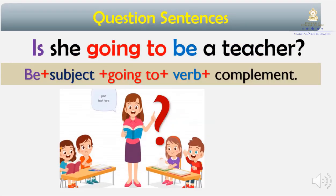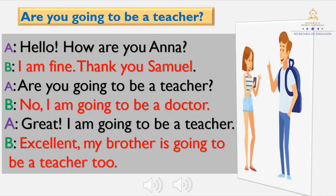Here I have a question example: Is she going to be a teacher? You are going to need: verb to be, subject, going to, verb, and complement. Remember that you need to add a question mark at the end of the question. Let's read this conversation.